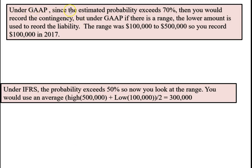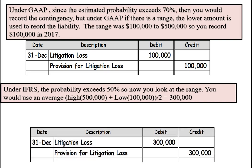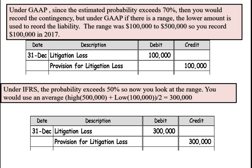Under GAAP, since the estimated probability exceeds 70 percent, we are required to record a contingency. Since the range is between one hundred and five hundred thousand, the requirement is to record the lower end of the range. So in 2017 we would record a loss of one hundred thousand and set up a liability account for one hundred thousand. Under the international standard, since it also exceeds 50 percent, we average the range: the average comes out to three hundred thousand. So we would record a loss of three hundred thousand and a liability of three hundred thousand.